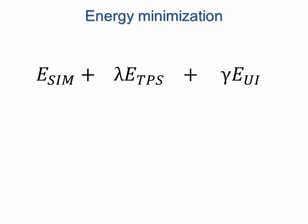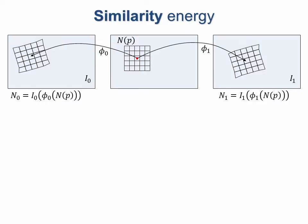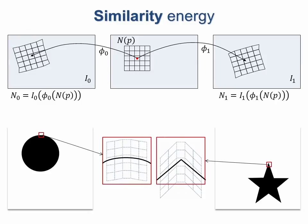We minimize an energy function consisting of three terms: structural similarity between the images, smoothness of the mapping, and deviation from user-specified correspondence terms. The similarity energy attempts to match pixel neighborhoods of each halfway image pixel in the two deformed input images. We use a modified structural similarity energy to match regions with similar edge structure, such as the object boundaries in this circle to star example.